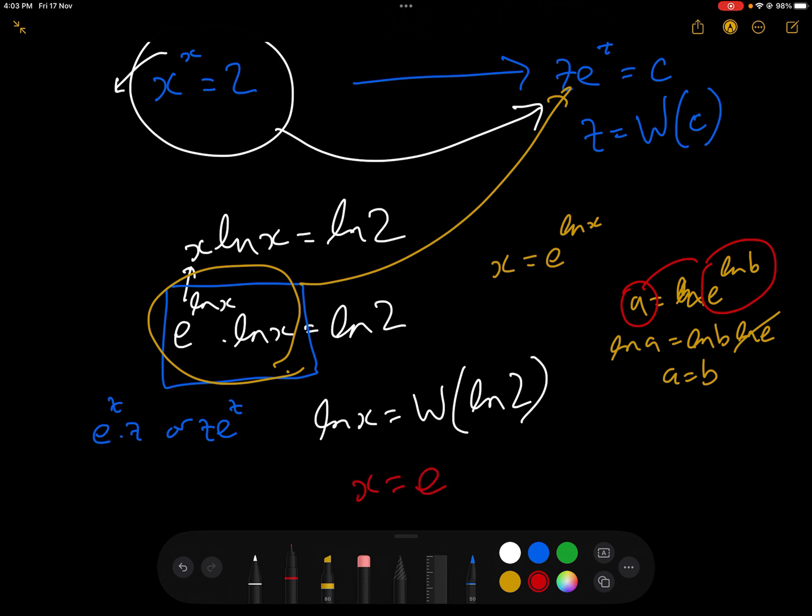And therefore, if log x = W(log 2), then our answer x = e^(W(log 2)), and that is the solution to the equation x to the power of x equals 2.